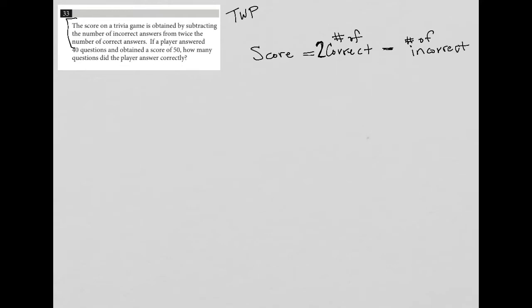So hopefully that makes sense. We are subtracting the number of incorrect from twice the number of correct, and that's how we get the score. So there's my translation.